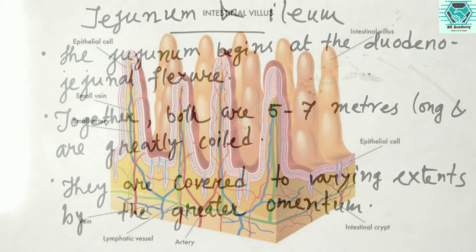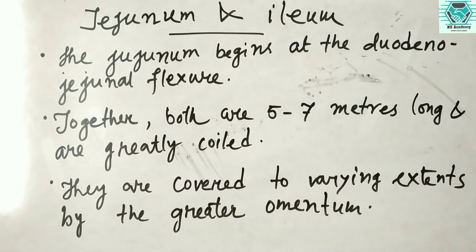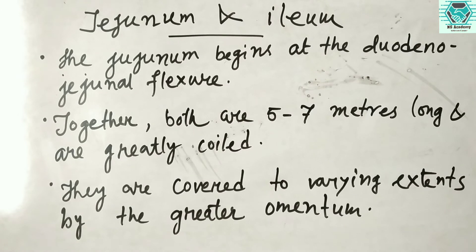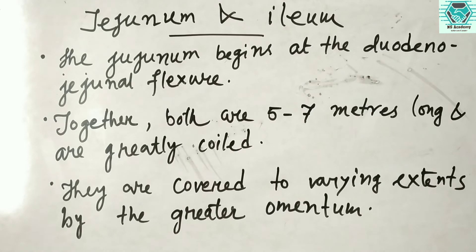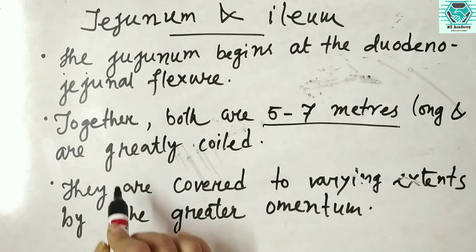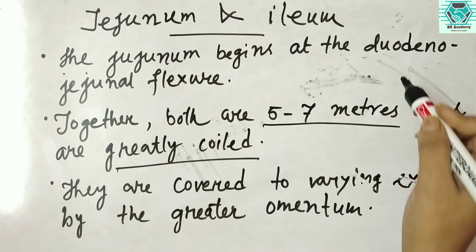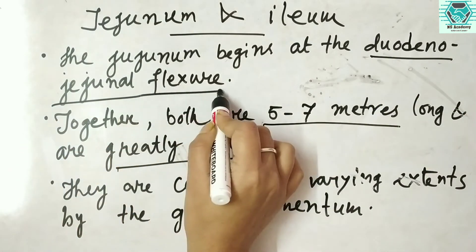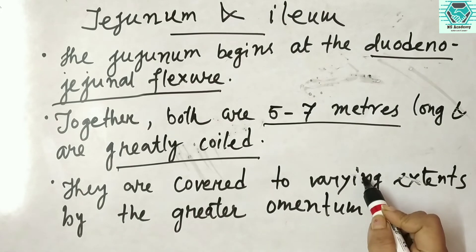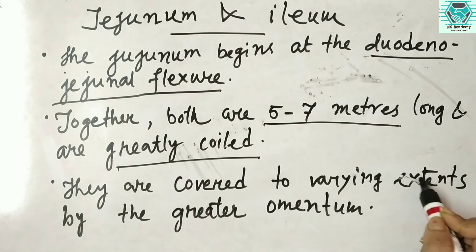The next parts of the small intestine are the jejunum and ileum. The jejunum begins at the duodenojejunal flexure. Together, the jejunum and ileum are 5 to 7 meters long, are greatly coiled, and are covered to varying extents by the greater omentum.